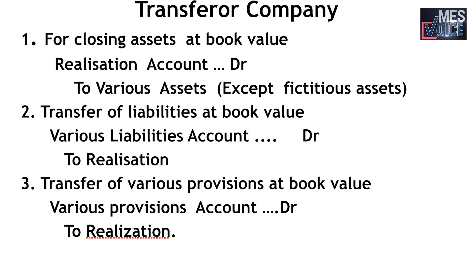Now, accounting entries in the books of the transferor (vendor) company. For this purpose, a realization account is opened in the books of the vendor company. A realization account is a nominal account prepared for the purpose of closing the accounts of assets and liabilities of the vendor company and for finding out the profit or loss on realization. The first entry is for closing assets at book value: debit realization account, credit various assets. Items not taken over by the purchasing company — such as debit balance in P&L account, advertisement suspense account, discount on issue of shares or debentures, underwriting commission, etc. — are transferred to the equity shareholders account.